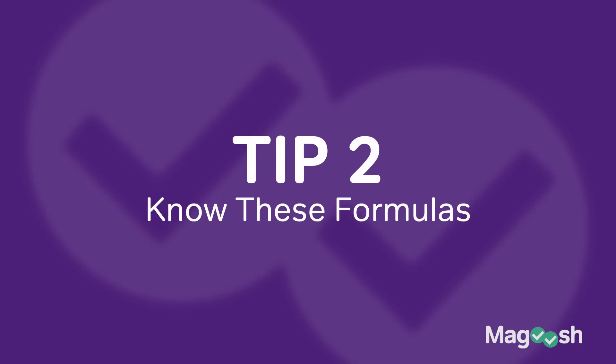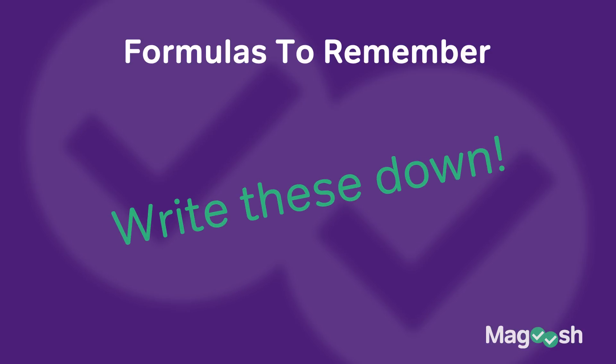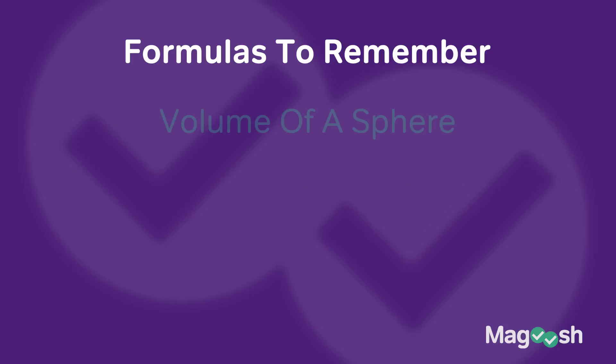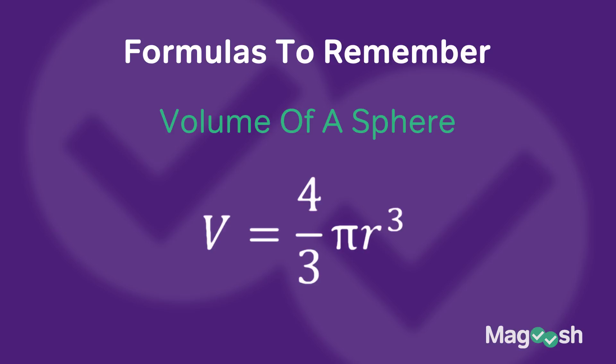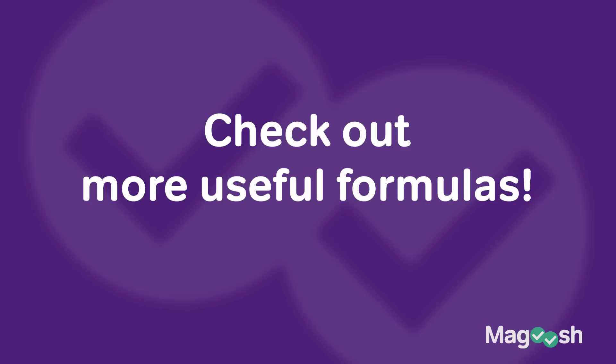Tip number two is I want you to know a couple formulas but I don't want you to spend too much time memorizing formulas. These are two equations that you really do need to know that a lot of students do not already have memorized: the volume of a sphere — four thirds pi r cubed, where r is the radius — and the quadratic equation: x equals negative b plus or minus the square root of b squared minus 4ac, all over 2a. If you do have more time, look over other formulas — we have a downloadable list in the link below — but make sure you know those two.